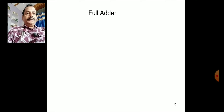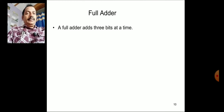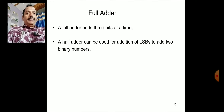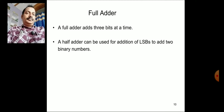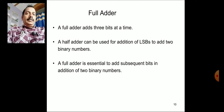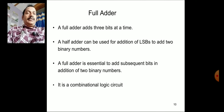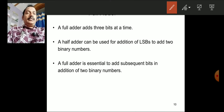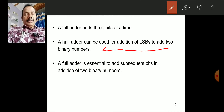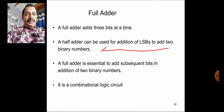Now let us consider the full adder. A full adder is a three-bit adder — it adds three bits at a time. A half adder can be used for addition of the LSBs of two binary numbers. A full adder is essential to add subsequent bits in the addition of two binary numbers. It is a combinational circuit. The LSB bits in the first stage can be added with a half adder instead of a full adder.